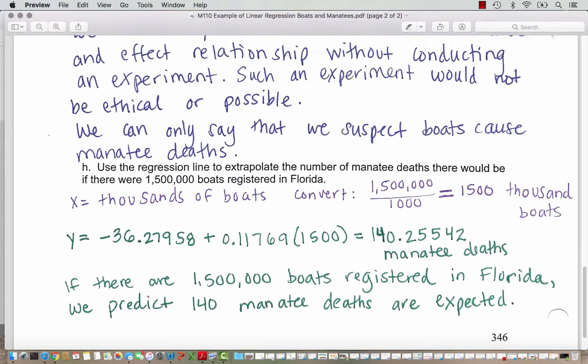Now we want to use a regression line to extrapolate. To extrapolate is to make a prediction outside of the range of x values that we were given. We're going to go a little bit higher to extrapolate the number of manatee deaths there would be if there were 1,500,000 boats registered in Florida. We're going to assume that this is just a little bit higher than the values in our graph so that this is a reasonable range to make predictions. So here x is the thousands of boats. So we have to take 1,500,000 and convert that to thousands. So 1,500,000 divided by 1,000 is 1,500 boats.